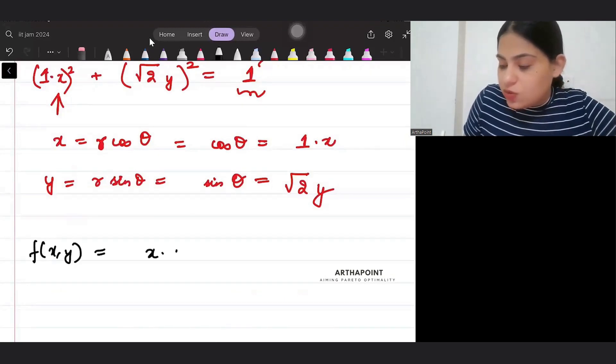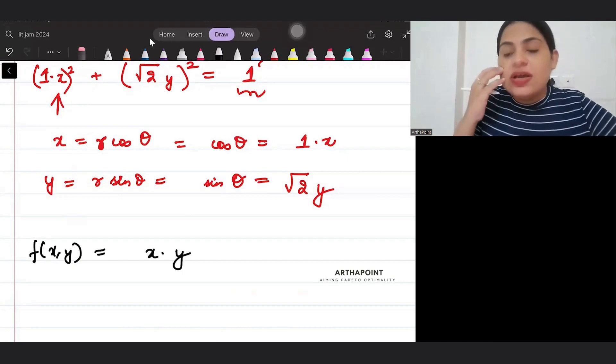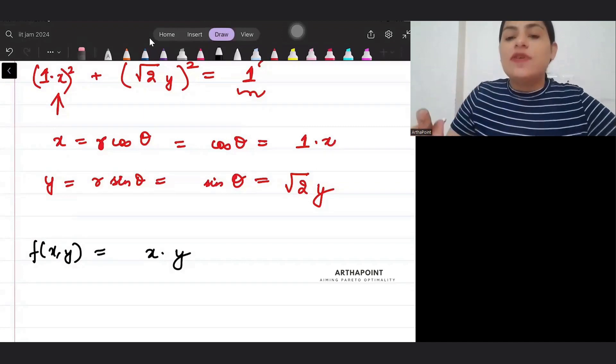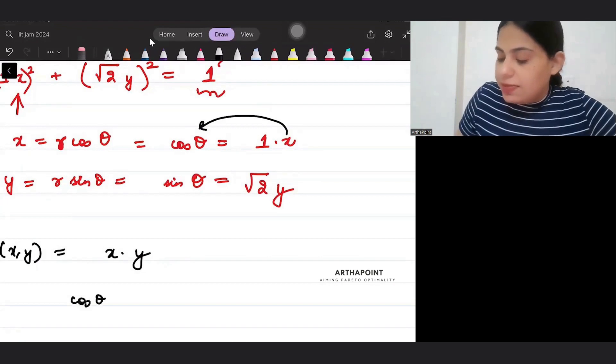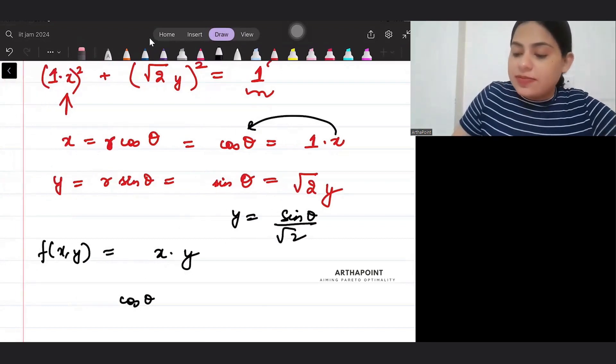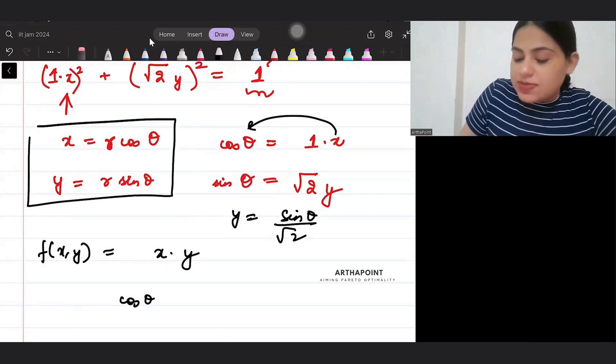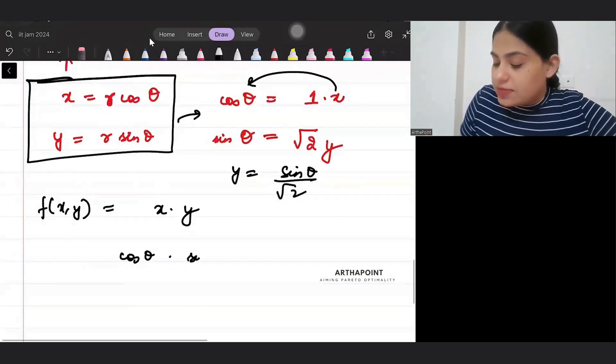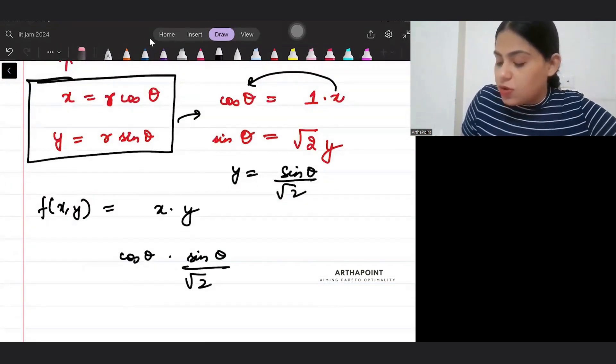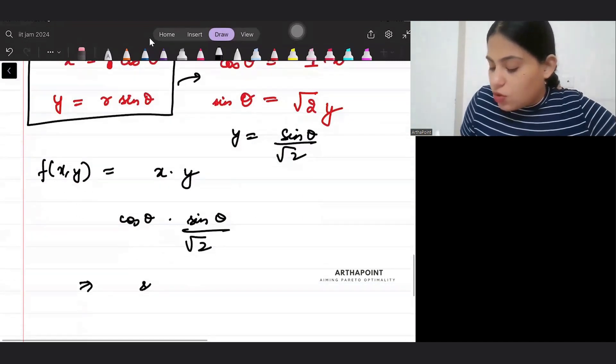What will be your function now? Your function is x into y. So your function's value, x is cos theta and y is going to be sin theta by under root 2.